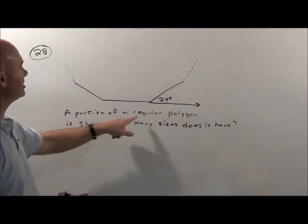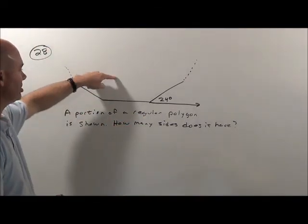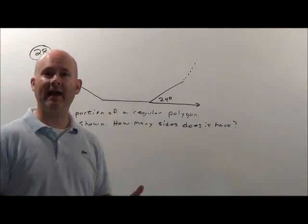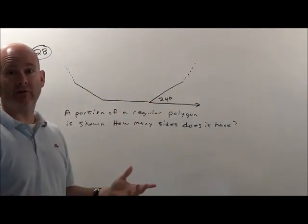Problem 28. It says a portion of a regular polygon is shown. How many sides does it have? Well, it gives us the exterior angle.